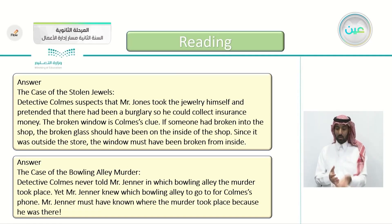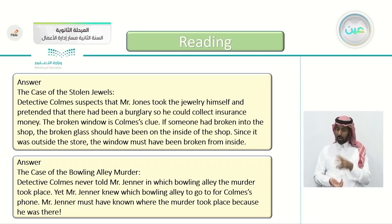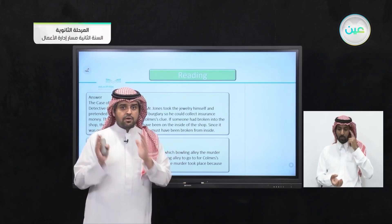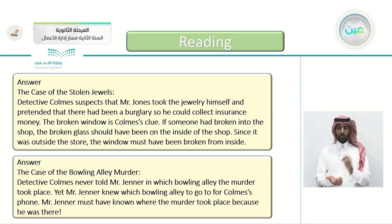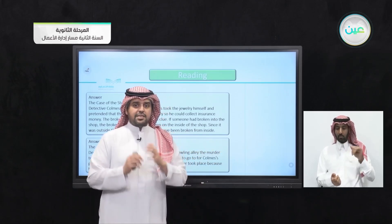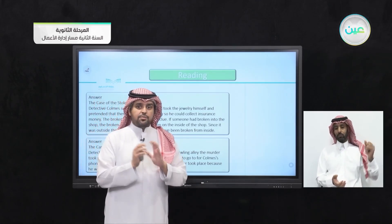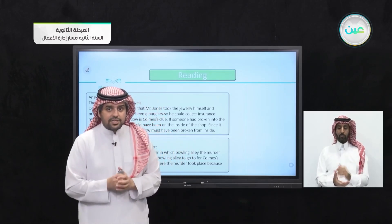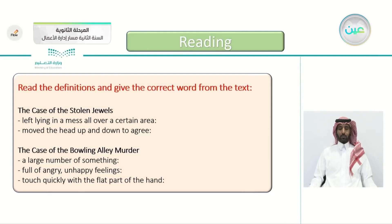For 'The Case of the Bowling Alley Murder': Detective Combs never told Mr. Jenner which bowling alley the murder took place in. There were many bowling alleys in the city. Yet Mr. Jenner knew exactly which bowling alley to go to for Combs's phone — meaning he must have already known where the murder took place because he was there. That is the evidence Combs based his suspicion on.